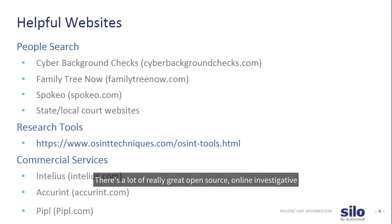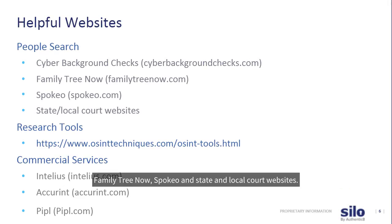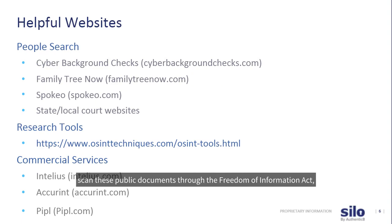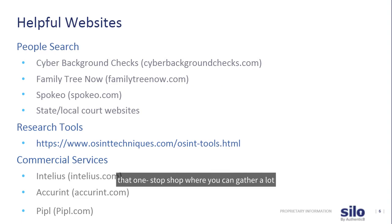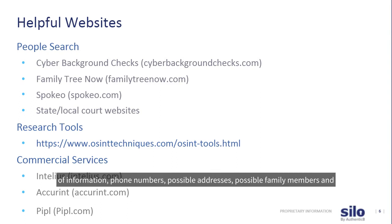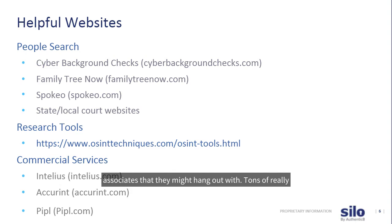There are a lot of really great open source online investigative tools specifically for looking at people — CyberBackgroundChecks.com, FamilyTreeNow, Spokio, and state and local court websites. These first three scan court websites and public documents through the Freedom of Information Act, and they combine all that information for you. It's kind of a one-stop shop where you can gather phone numbers, possible addresses, and possible family members and associates.